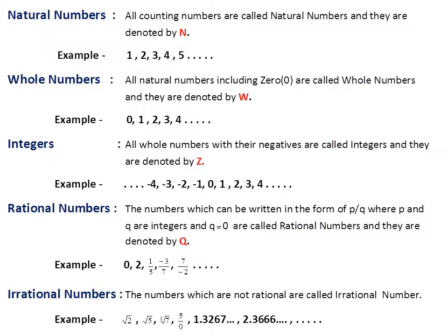Next is rational numbers. The numbers which can be written in the form of p upon q, where p and q are integers and q is not equal to 0 — that is a must: q is not equal to 0, meaning the denominator cannot be zero — are called rational numbers and they are denoted by capital Q. For example: 0, 2, 1/5, -3/7, 7/(-2), and so on.